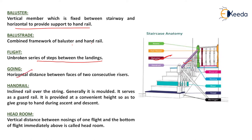Going is the horizontal distance between faces of two consecutive risers. Handrail is an inclined rail over the string, generally molded; it serves as a guardrail and is provided at a convenient height so as to give a grasp to the hand during ascent and descent. Headroom is the vertical distance between the nosing of one flight and the bottom of the flight immediately above.